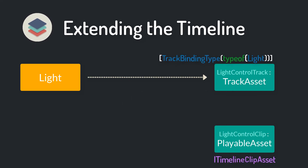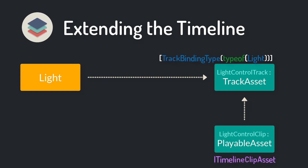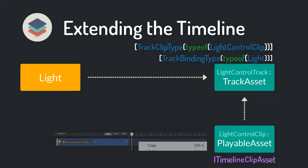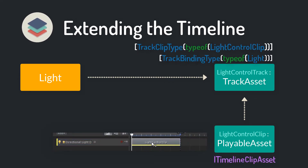Right now our light control track doesn't know anything about the light control clip. To specify that the track can contain light control clips, we need to decorate it with the TrackClipType attribute. Now we are able to create light control clips in the timeline.